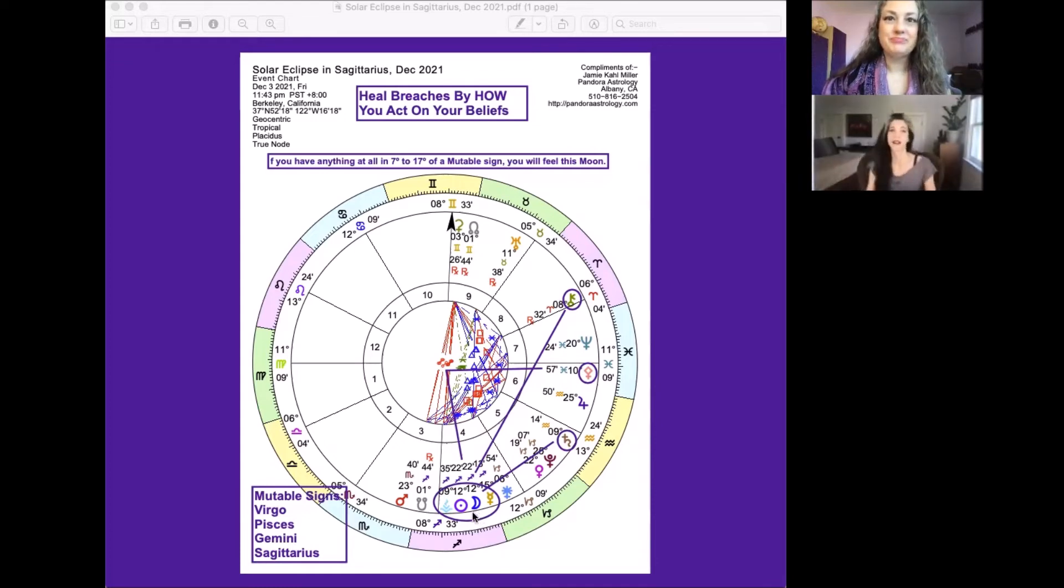And that trine from Chiron shows that releasing this is going to be healthy. It's going to feel better. It might be a little bit of a bumpy process, because it's Chiron, and Chiron points at our wounds, our older wounds, but that this release is actually going to help us heal. Again, even though this is eclipse season, we're seeing some positive eclipses, which is making me happy.